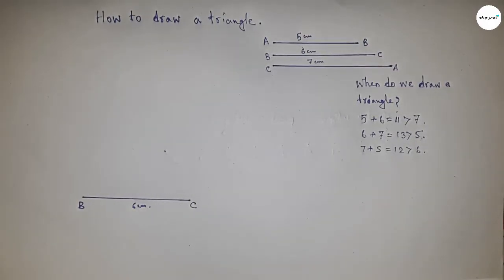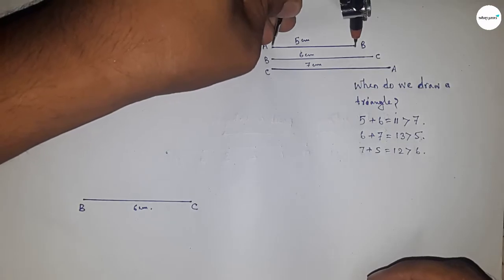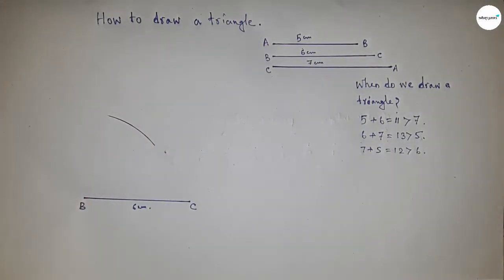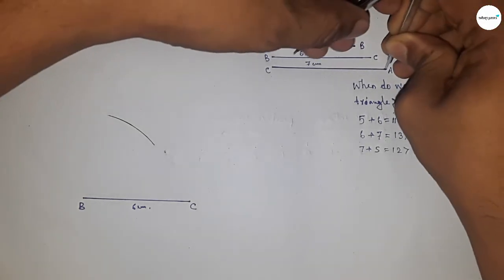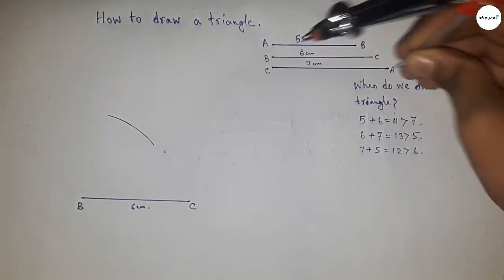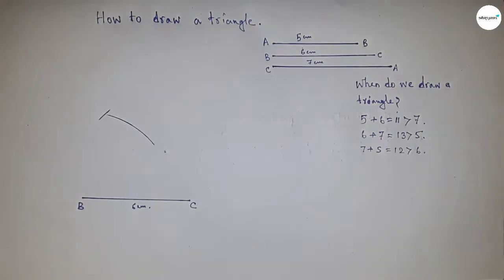Now, taking the distance 5 centimeters with the compass and placing it here, I'll draw an arc. Next, taking the length 7 centimeters with the compass and placing it here, I'll draw another arc.